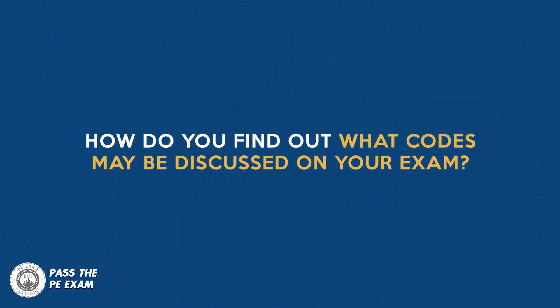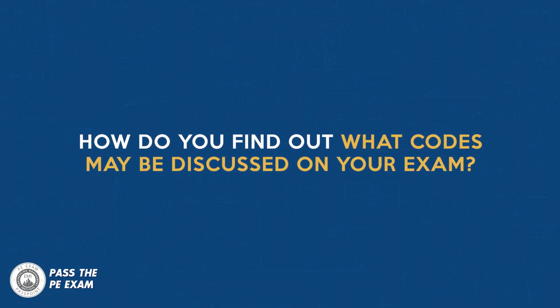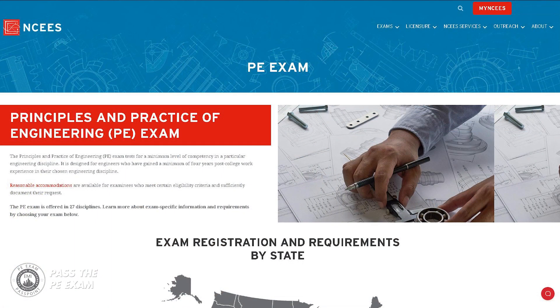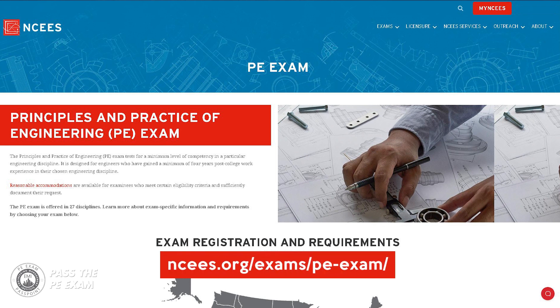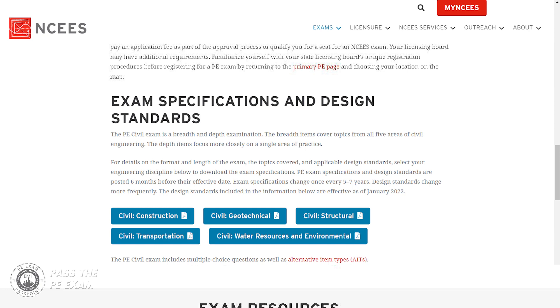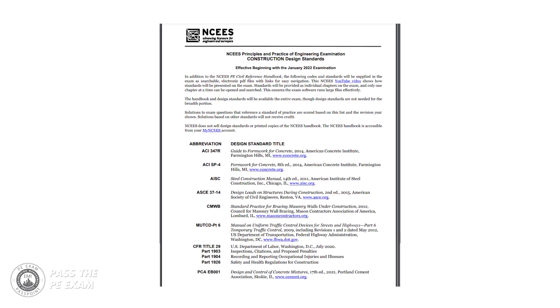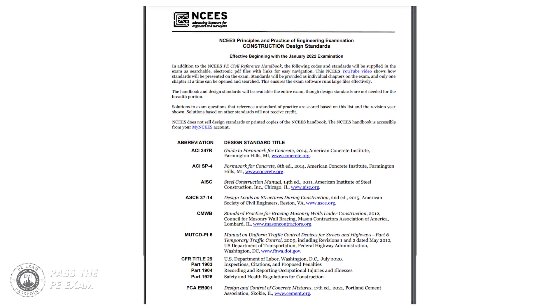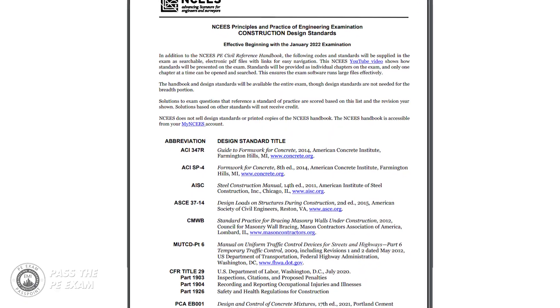They should also understand how to use these resources to solve problems and make decisions in their professional practice. So first, how do you find out what codes may be discussed on your exam? Depending on the PE exam you will take, go to the NCES website at ncees.org/exams/PE-exam, and select the exam specifications of your preference. Then select the engineering discipline to download the exam specifications and design standards. Once in the document, you can find a list of the codes and standards related to that exam.